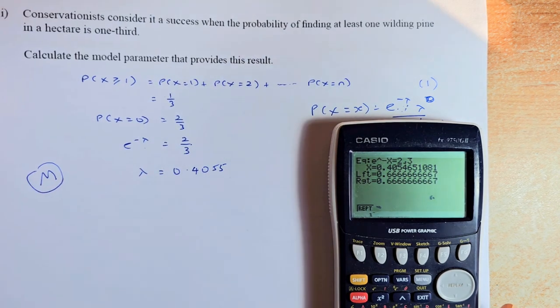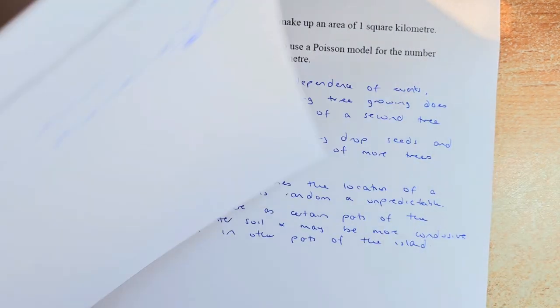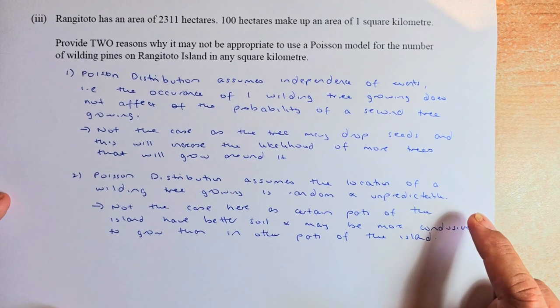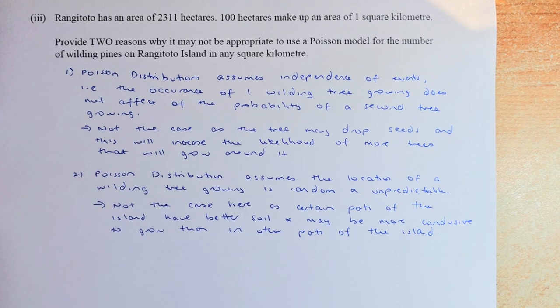Last but not least, we are going to do the excellence question. The excellence question is how you argue your case. So we shall look at question part 3. The question is Rangitoto has an area of 2,311 hectares. 100 hectares make up an area of 1 square kilometer. Provide two reasons why it is not appropriate to use the Poisson model for the number of wilding pines on Rangitoto Island in any square kilometer. There are more than two reasons, but we are going to do two because we are running out of time.